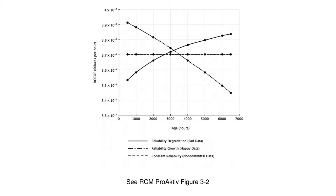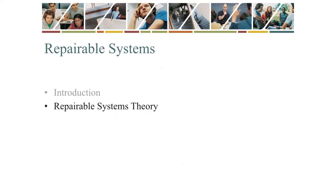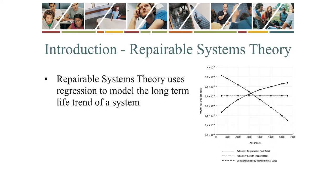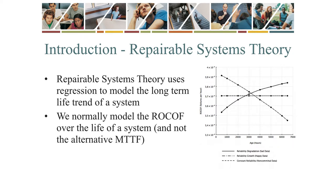That is why we believe that we need to replace a system after a certain amount of use. Let us explore this theory. As we saw on the graph, a repairable system typically has an increasing ROCOF. This increasing line can be modeled through regression. In repairable systems we model the ROCOF. We could also model the MTTF, which is the reciprocal or inverse of the ROCOF — that is, one divided by the ROCOF.